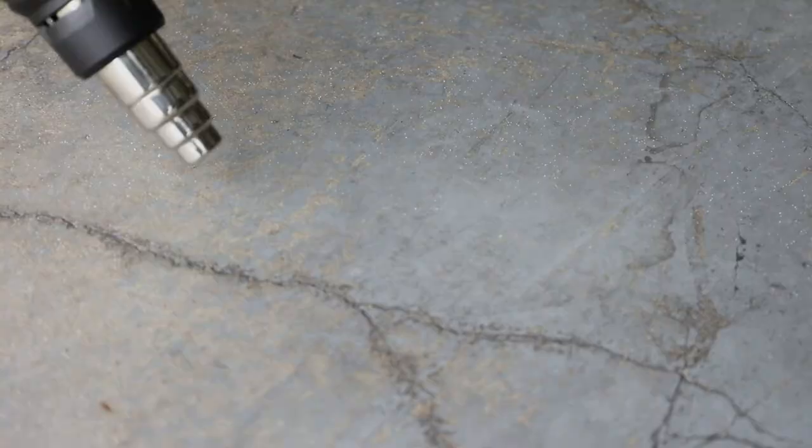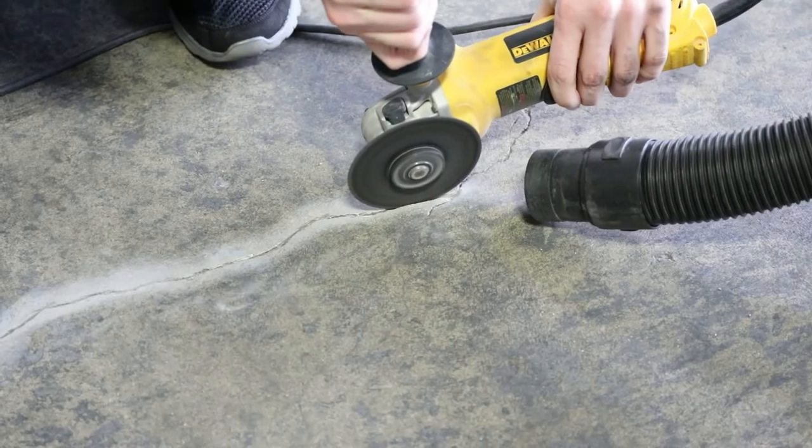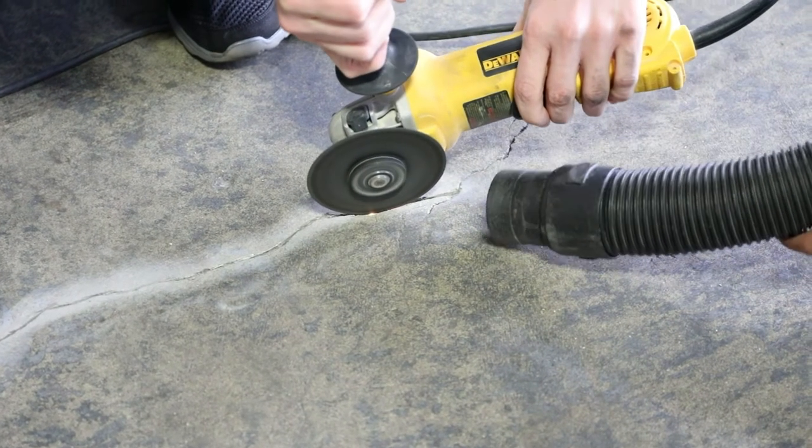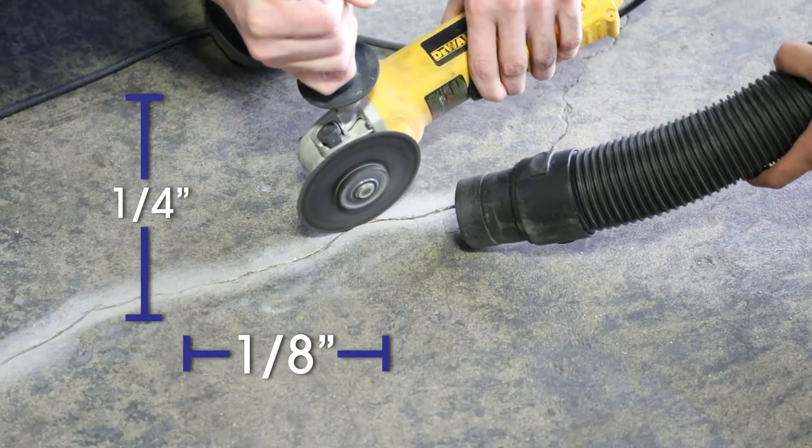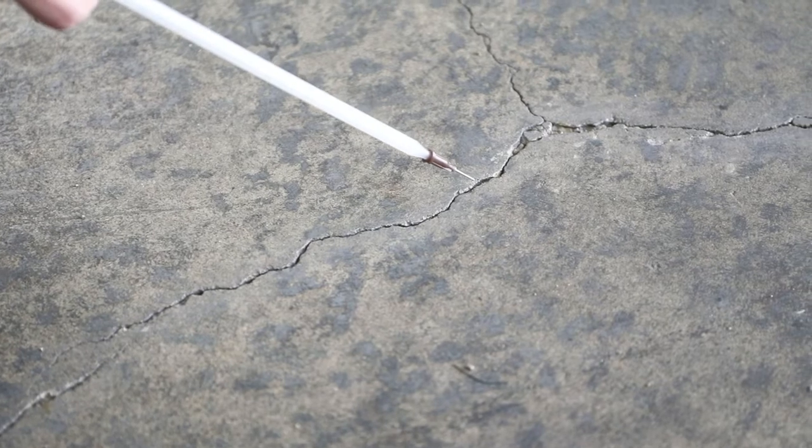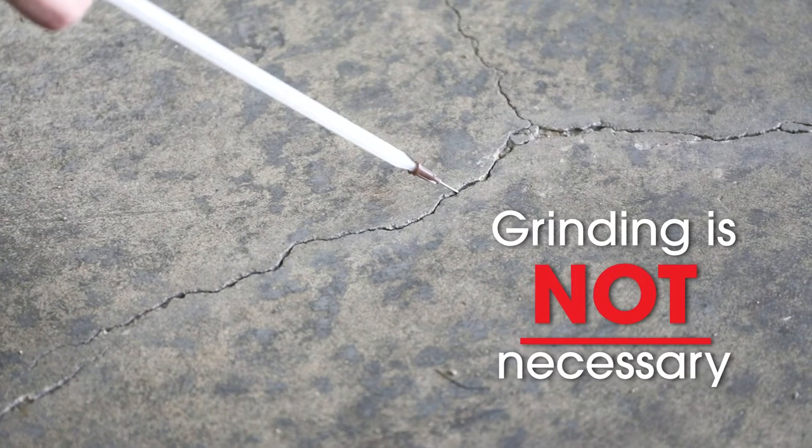To improve penetration of material, hairline cracks may need to be opened up to at least 1/8 inch wide by 1/4 inch deep with an angle grinder. If the needle tip fits inside the crack, however, grinding it is not necessary.